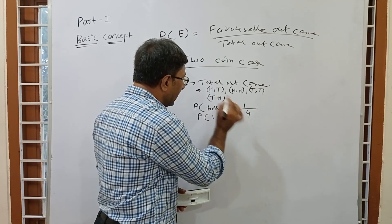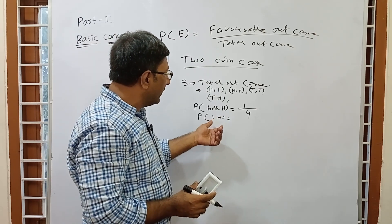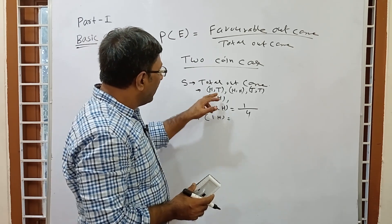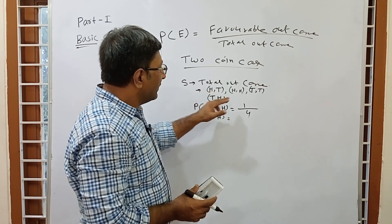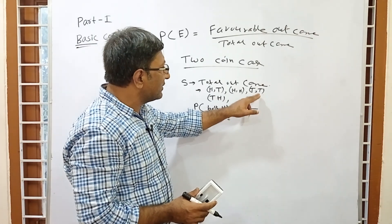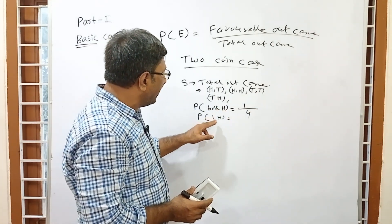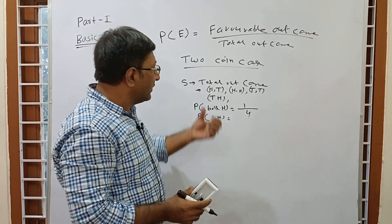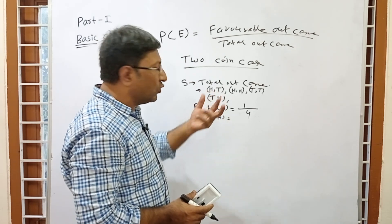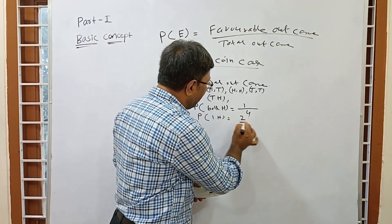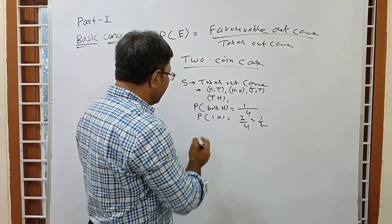Next, probability of exactly 1 head — that means the probability that only 1 head appears. Looking at the outcomes: HT has 1 head and TH has 1 head. HH has 2 heads and TT has no heads. So we need exactly 1 head — 2 outcomes qualify. The correct answer is 2/4 = 1/2.